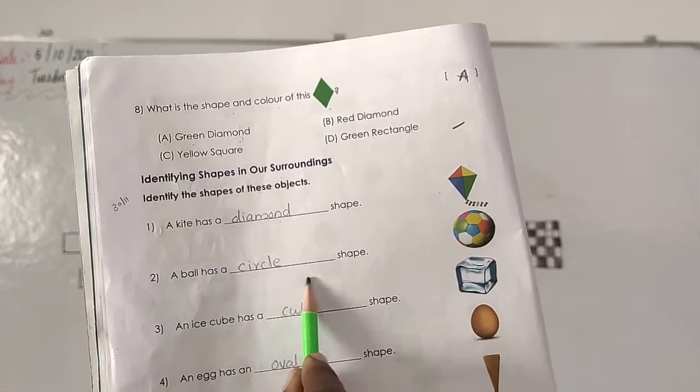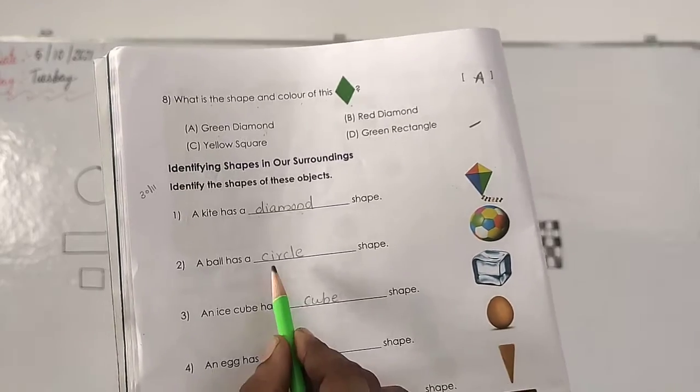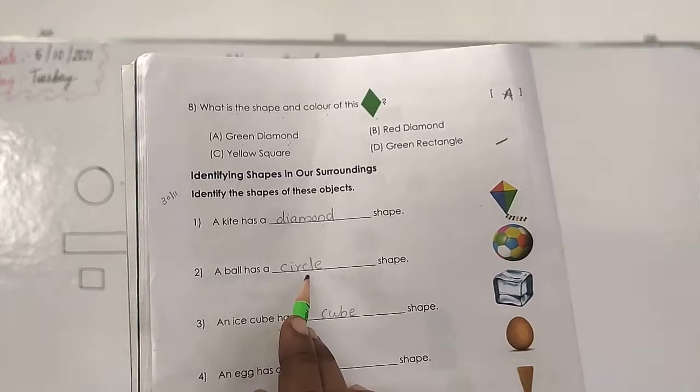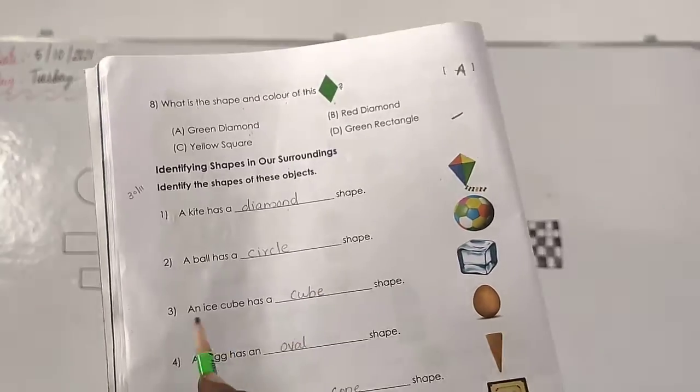A ball has a dash shape. This ball has a which shape? Circle. Yes. Write down circle. C-I-R-C-L-E circle. Complete it.